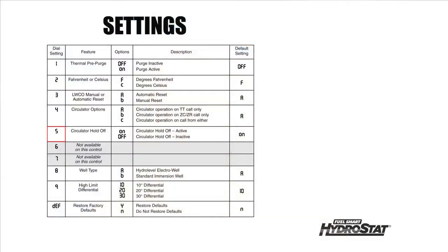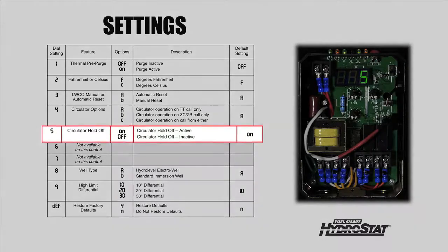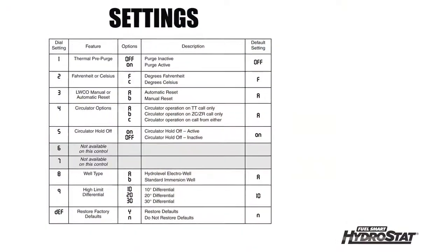Option five is called circulator holdoff. This option is used for cold start applications and provides for holding the circulator off on a call for heat until the boiler temperature reaches 125 degrees Fahrenheit. This allows the boiler to heat up faster and minimizes the time the boiler is operating at a temperature in which flue gases will condense.